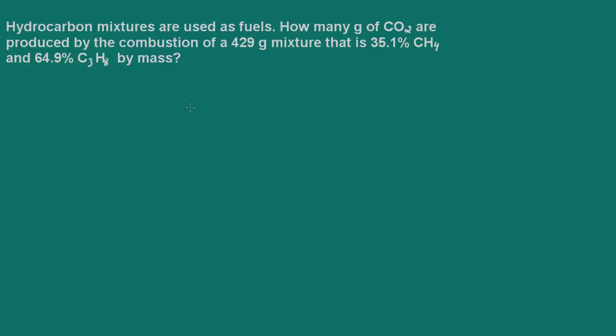The best way to approach this problem is to write out the balanced combustion equations, one for methane and one for propane. And then what we do is we determine the number of grams of carbon dioxide produced from each and then just combine the two for the total carbon dioxide produced.